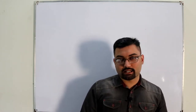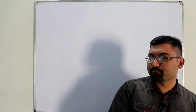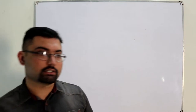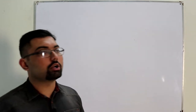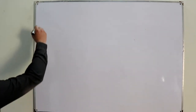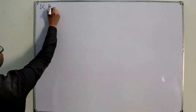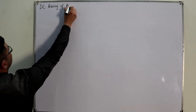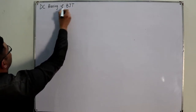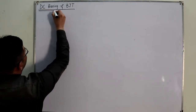Bismillahirrahmanirrahim. Assalamu alaikum. Salah Khan here, and I welcome you back to my YouTube channel. We are done with chapter number three of Electronic Devices and Circuits. Today we start a new topic — chapter number four: the DC biasing of BJTs.